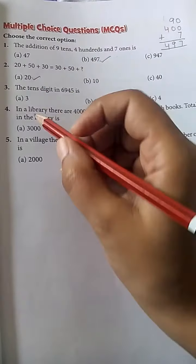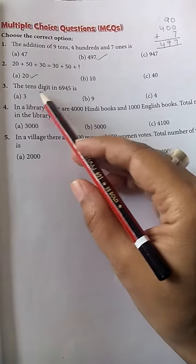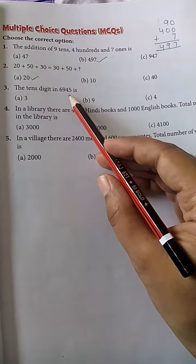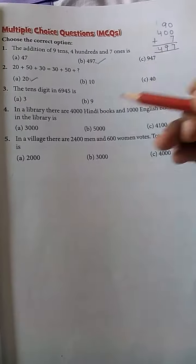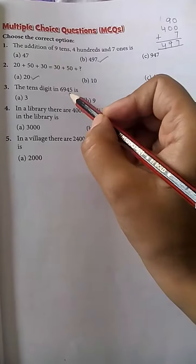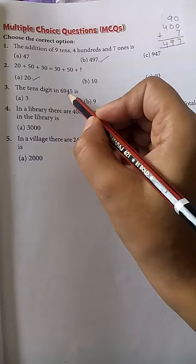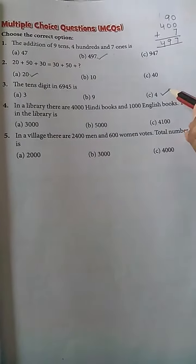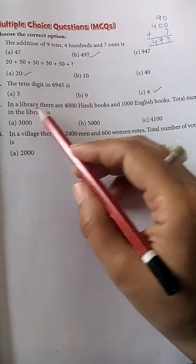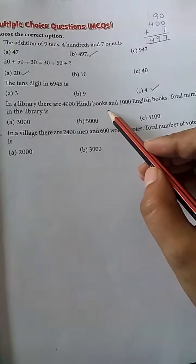Problem 3: The tens digit in 6,945 is? This is the ones position, this is the tens position: 4. So answer C is correct. Problem 4: In a library there are 4,000 Hindi books